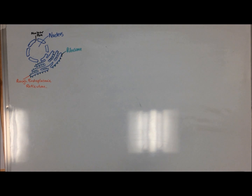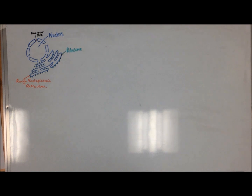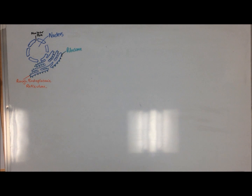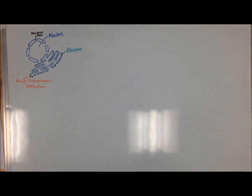Here is a diagram representing the nucleus and the ER, or endoplasmic reticulum. As you can see, the ER is continuous with the nuclear membrane. The RER, or rough endoplasmic reticulum, in particular has proteins associated with it called ribosomes.